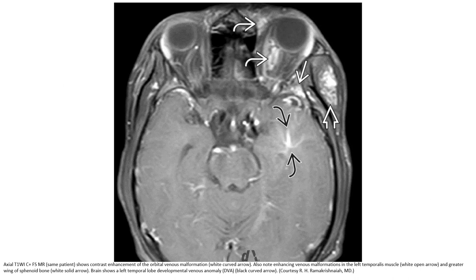T1 with fat-suppressed MRI shows contrast enhancement of the orbital venous malformation. Also note enhancing venous malformation in the left temporalis muscle and greater wing of sphenoid bone. On brain imaging, note the left temporal developmental venous anomaly.